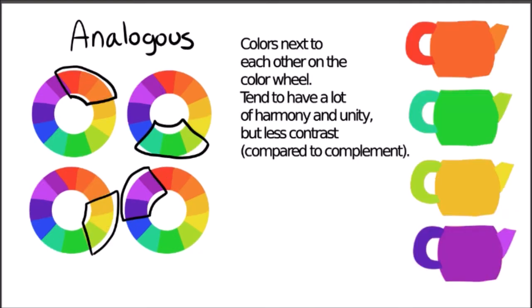An analogous color scheme uses colors that are next to each other on the color wheel, usually just two or three — so red, red-orange, and orange, or yellow-orange, orange, and yellow-green.